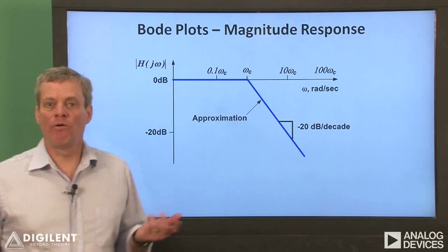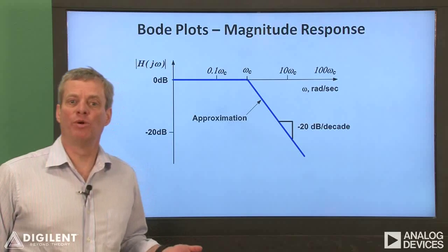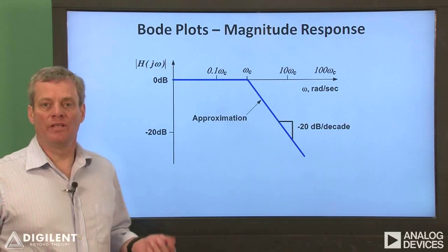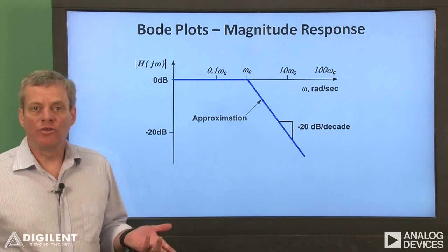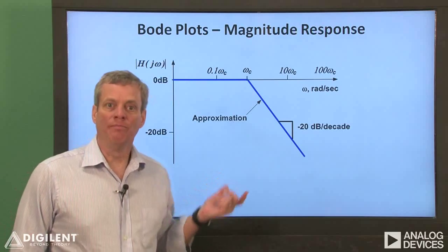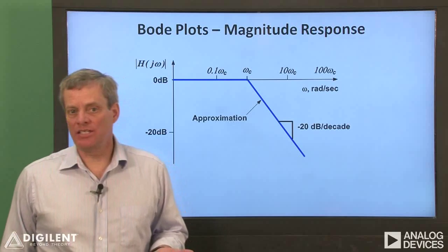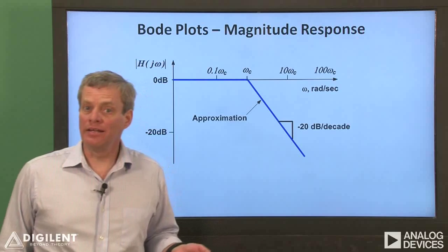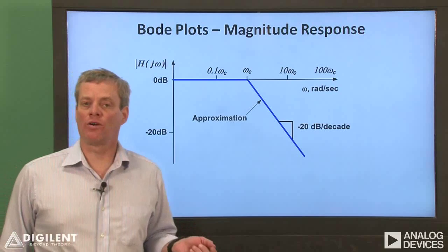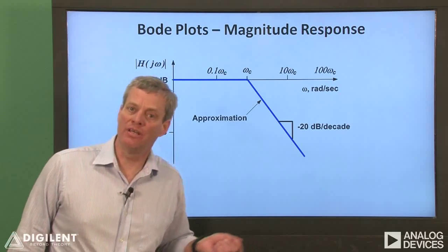Before we demonstrate the network analyzer, I want to give a very brief review of Bode plots. This review will be in the context of a first-order low-pass filter. The magnitude response displayed in Bode plot form has gain expressed in decibels. Decibels are a way of representing gain on a logarithmic scale. Gain in decibels is 20 times the logarithm of the ratio of the output to the input.